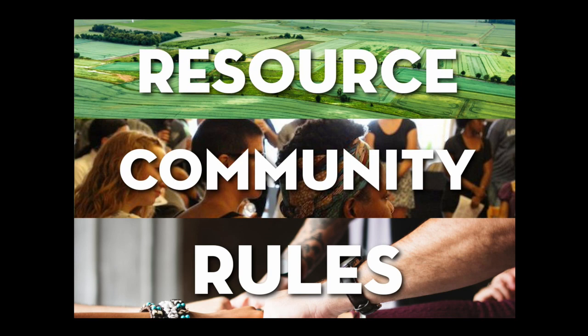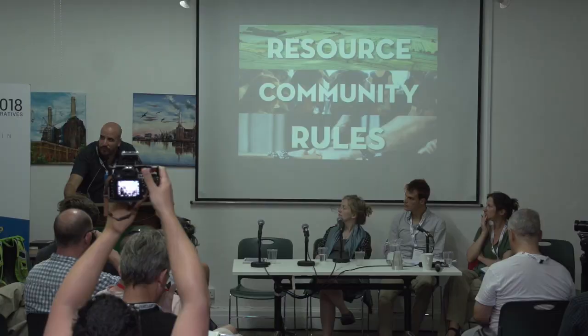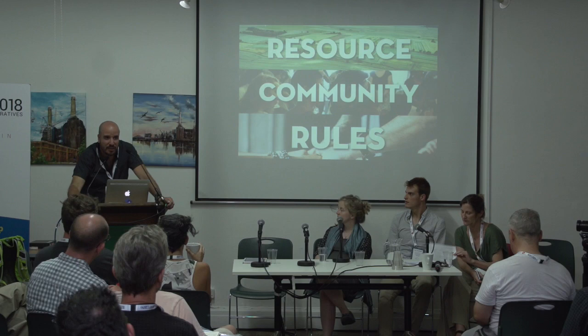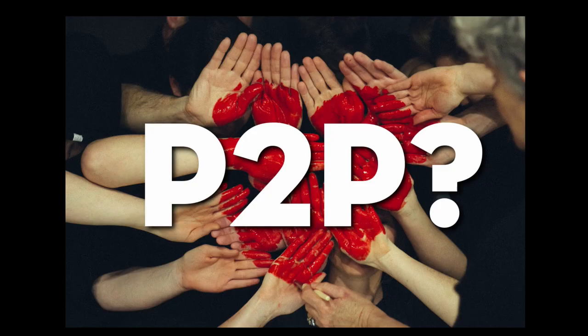If you think about Wikipedia, the resource would be universal knowledge, the community the editors, the readers, and the people at the Wikimedia Foundation, and the rules what they've made up over the span of 15 years. If you want to think about your edible forest garden, the resource would be the trees and the fruits you harvest from those trees, the community the people who are taking care of it and eating what they're picking up, and the rules what they've worked out according to their criteria.